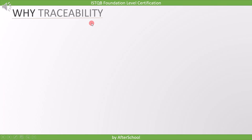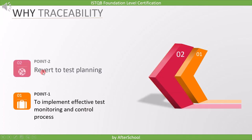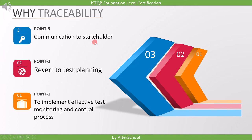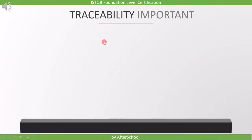First point is to implement effective test monitoring and control process. Second point is to revert to test planning based on the feedback. Third point is to communicate to stakeholders. Now let's see the importance of traceability.